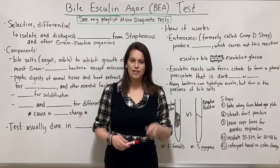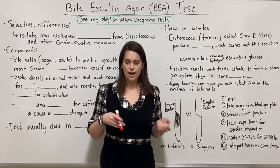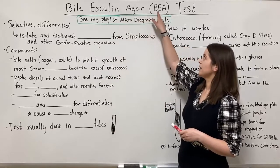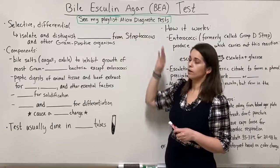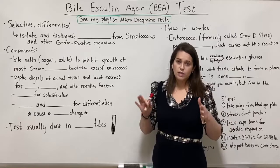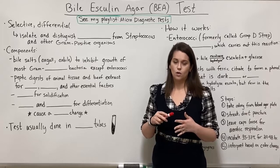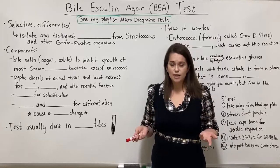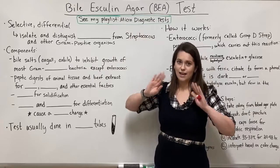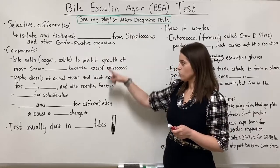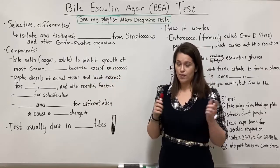Hi everyone and welcome to Biology Professor. Today we're going to be going over the Bile Esculin test, or the Bile Esculin Agar test — sometimes this agar is abbreviated BEA. Before we jump into it, I have a playlist on microbiology diagnostic tests that covers all of the selective and differential agars, tests like the catalase test, the lecithinase test, the coagulase test, and all the different stains you need to be familiar with in a microbiology lab. Also, if you want to grab a picture of the final board with all the answers filled in, grab it from the link in the description — that's your free study notes.